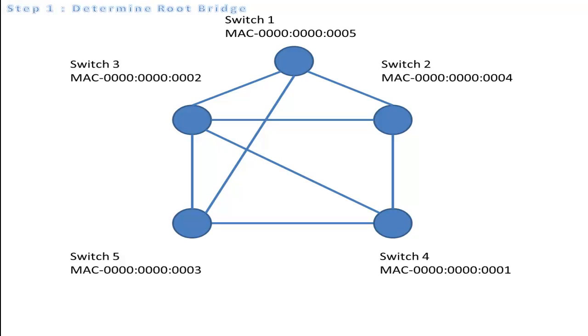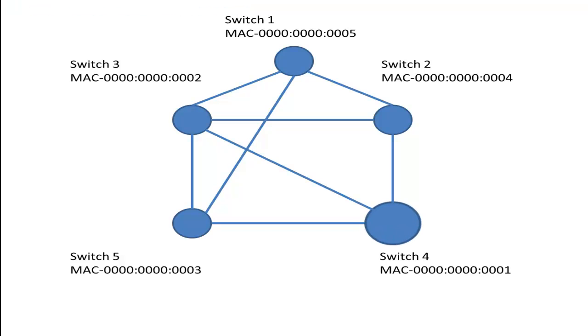In this example, we determine the root bridge by using the smallest MAC address, which switch 4 has. Thus switch 4 is the root bridge.